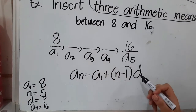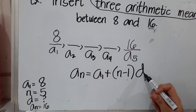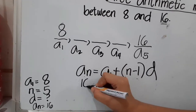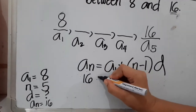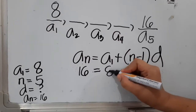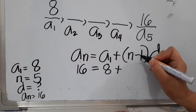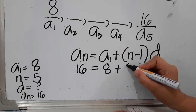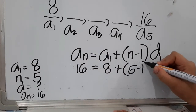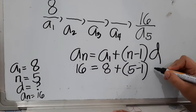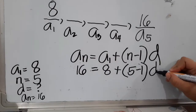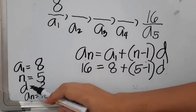With these givens, we can now substitute into our formula. a sub n becomes 16, equals the first term 8, plus n minus 1 which becomes 5 minus 1, multiplied by d — since we don't have the value of d yet.